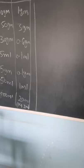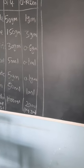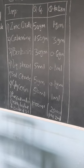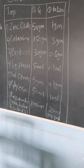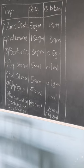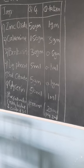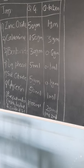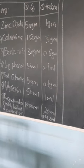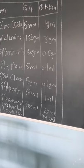After calculations, we get the quantities: zinc oxide 1 gram, calamine 3 grams, bentonite 0.6 grams, liquid phenol 0.1 ml, sodium citrate 0.1 gram, glycerin 1 ml, and purified water to make 20 ml. Note that liquid phenol is taken in volume, so it is 0.1 ml.